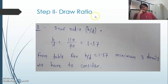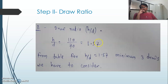Step two is finding the draw ratio to determine how many draw operations will be required. The draw ratio is given as h/d = 110/70 = 1.57. Since this value is more than 1, the draw operation is critical and will require multiple steps. From the table given in the earlier video, if the h/d ratio is 1.57, then 3 draw operations are required — so at least 3 dies and 3 punches will be needed.